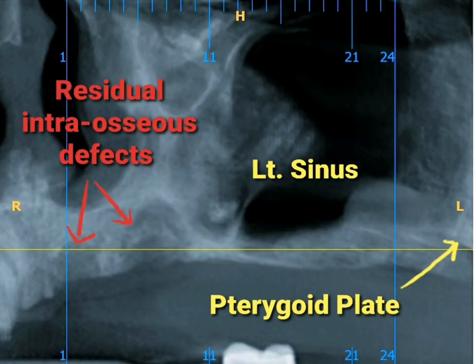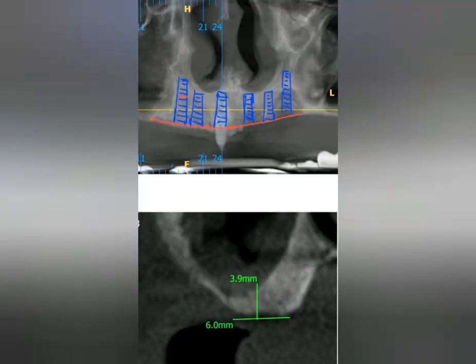On the left side, the maxillary sinus is similarly large up to the crest, and residual intraosseous defects are present at the region of the lateral incisor and canine. The arrow is presenting the pterygoid plate.